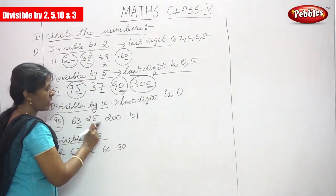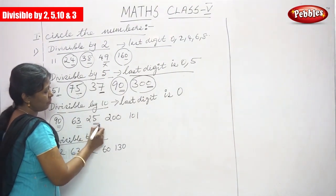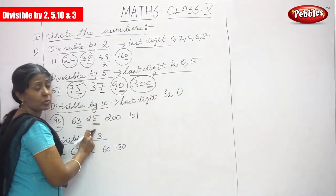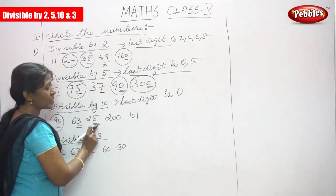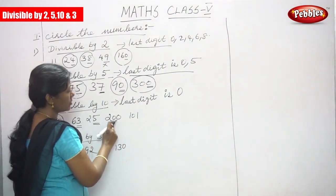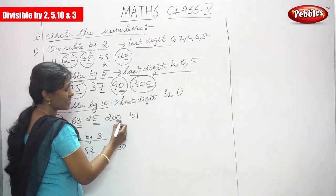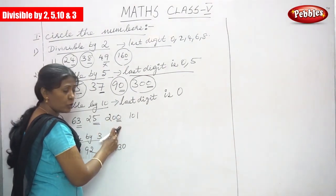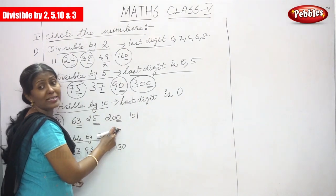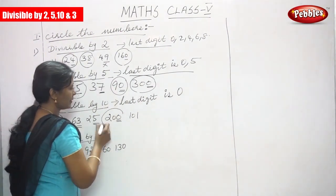Next, 25: the last digit is 5, so it does not end with 0 and is not divisible by 10. Next is 200: the last digit is 0, so it ends with 0 and is divisible by 10. Circle the number.